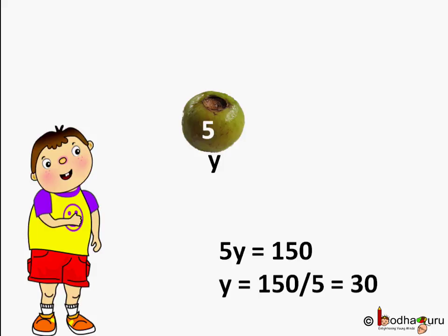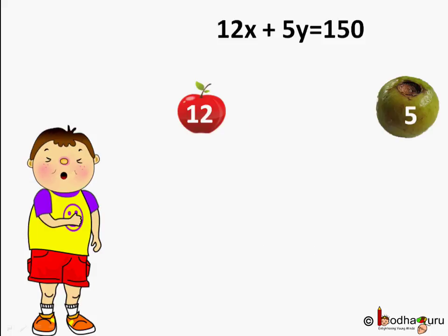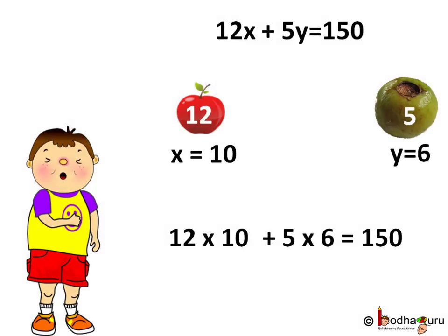But we want apples and guavas both. So we need to solve 12X plus 5Y is equal to Rs.150. Let us assume I take 10 apples then 12 into 10 is equal to Rs.120. So Rs.120 worth of fruits I have exchanged. Now Rs.150 minus Rs.120, 30 will be left. So in Rs.30 I can take 30 by 5 which is equal to 6 guavas. So X equal to 10 and Y equal to 6 is one solution.